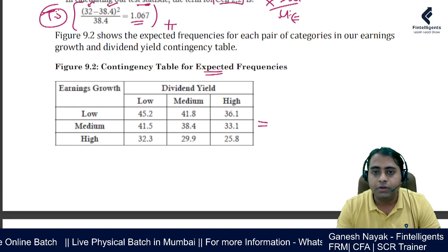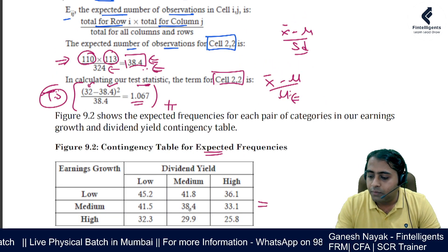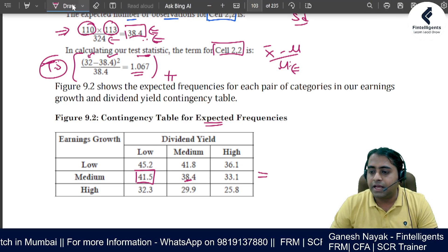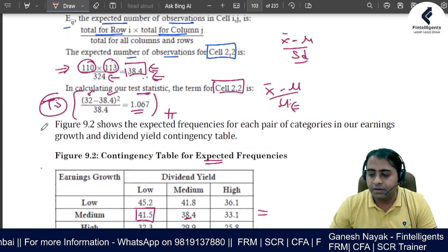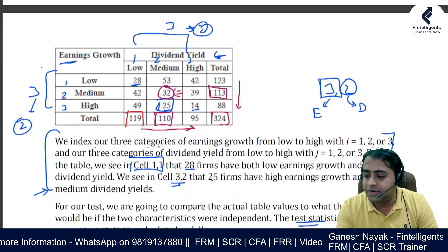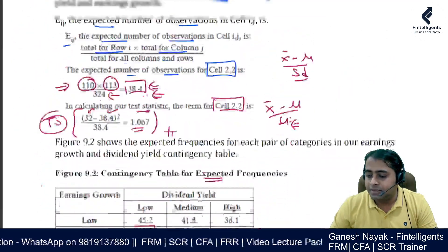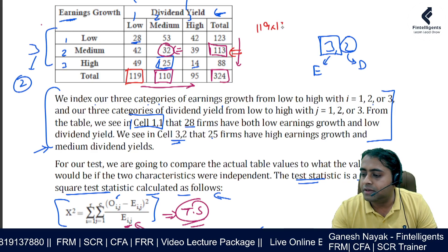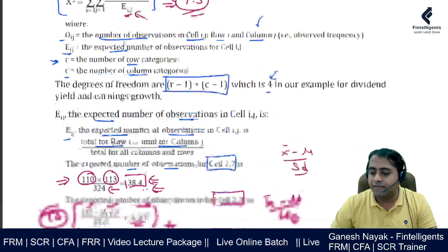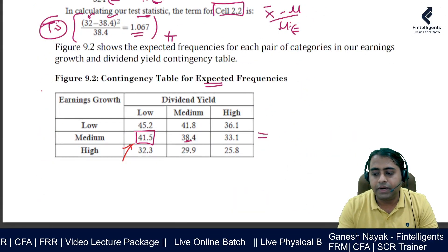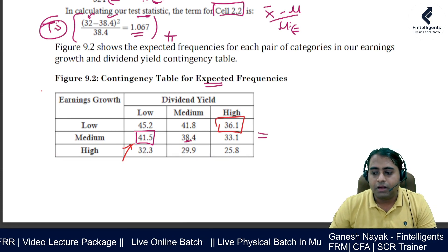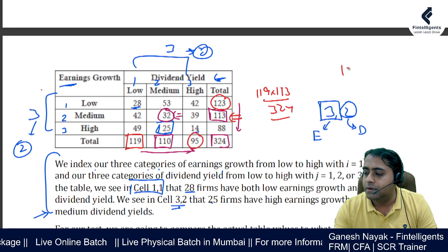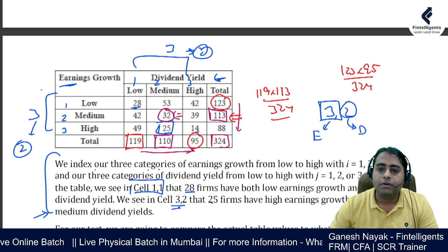The second table shows the expected values for all cells. For example, the expected value for cell (2,2) is 38.4, and for another cell it is 41.5. To find 41.5, we multiply the row total of 119 by the column total of 113 and divide by 324. Similarly, another cell's expected value is found using 123 times 95 divided by 324 to get 36.1.